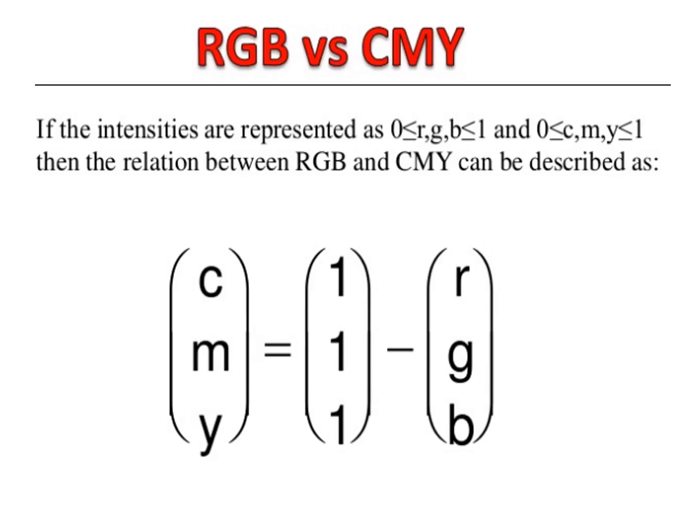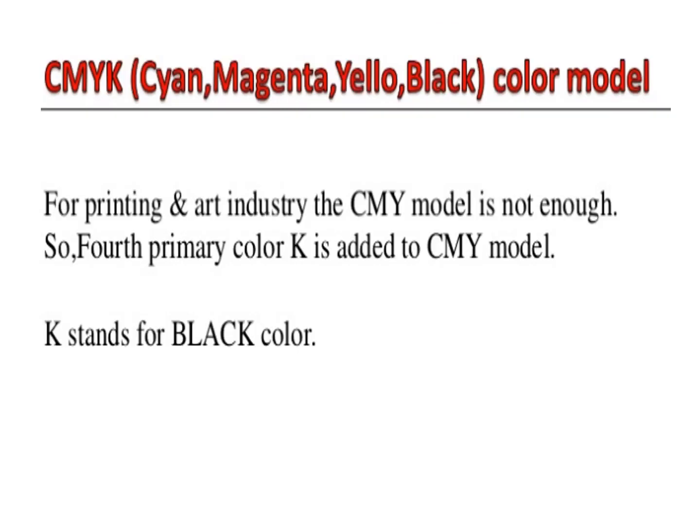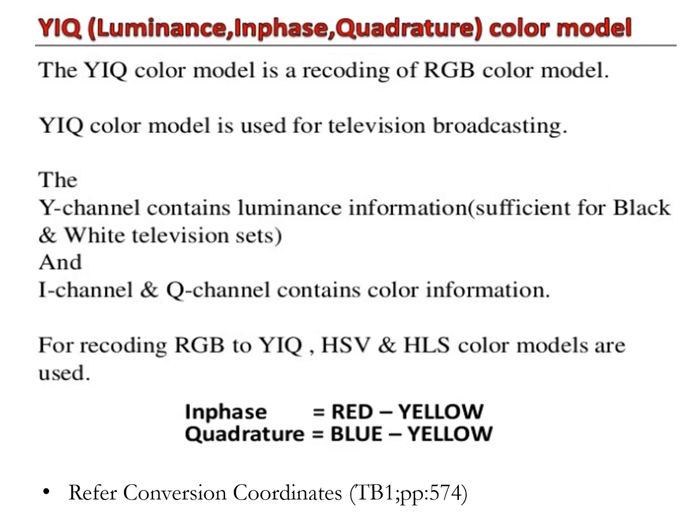If the intensities are represented in the ranges 0 to 1, the relation between RGB and CMY is inversely proportional, so we subtract them by 1. For the printing and art industry, the CMY model is not enough, so we add a fourth color K to the CMY model, where K stands for black.